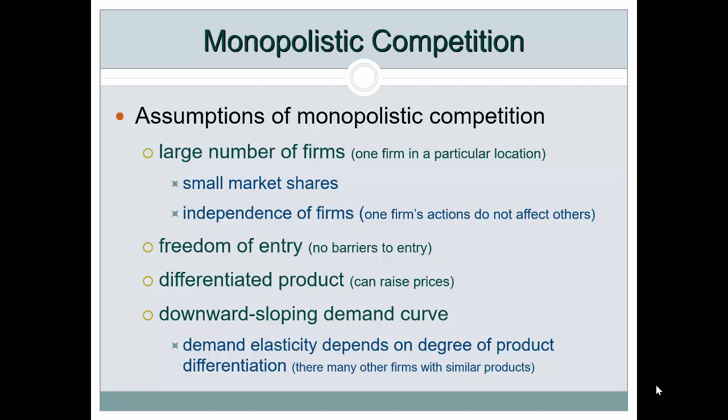In perfect competition we didn't have a downward-sloping demand curve for the firm, but here because of differentiation the firm can set its own price — higher prices mean lower demand, lower price means higher demand. Because there are many similar products from competing companies, the elasticity of demand is important. Demand elasticity determines how much profit the firm makes in the short run, and elasticity depends on the degree of product differentiation and how much effort a firm puts into developing new products or advertising.